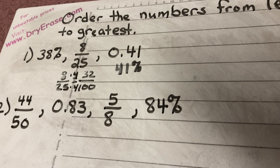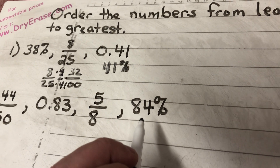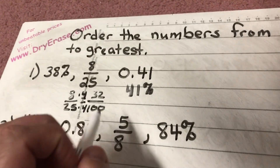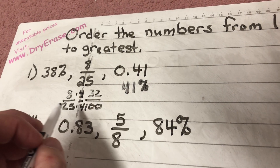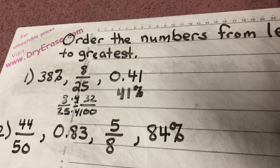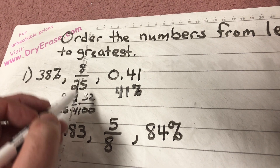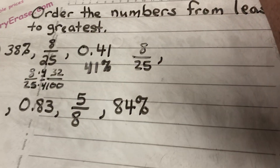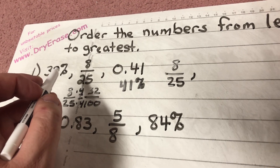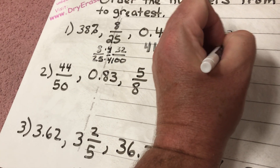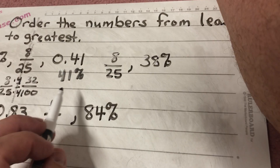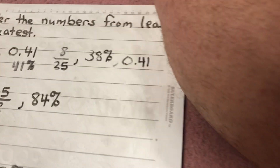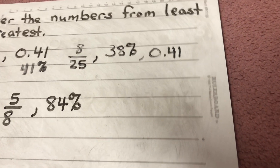So 8 over 25 is 32 percent, 38 percent is 38 percent, and 0.41 is 41 percent. Putting them in order from least to greatest: 8 over 25 comes first. Remember, put the original numbers — not a new percent or decimal. So first is 8 over 25, then 38 percent, then 0.41.